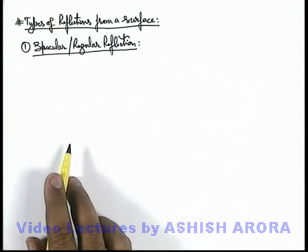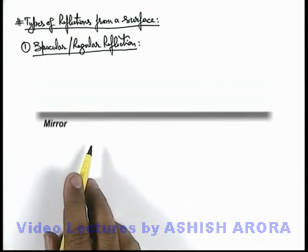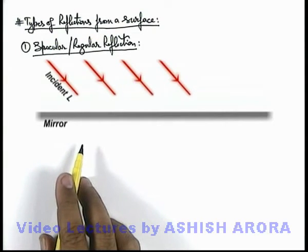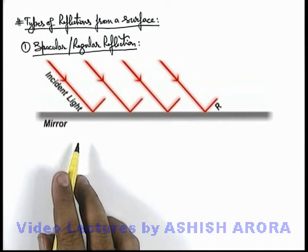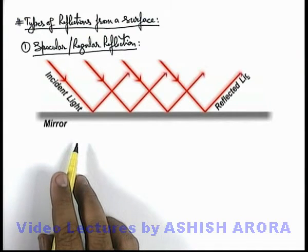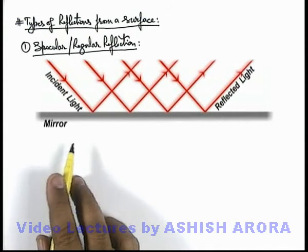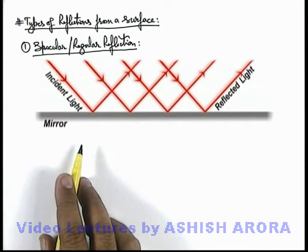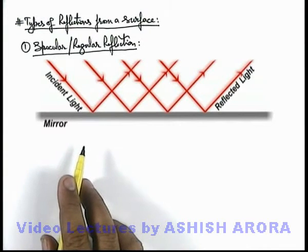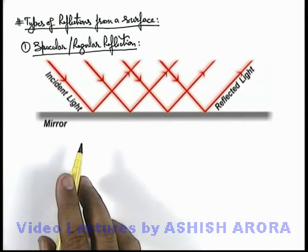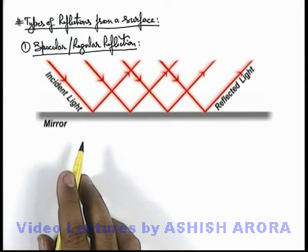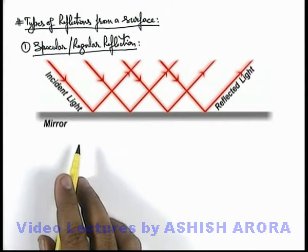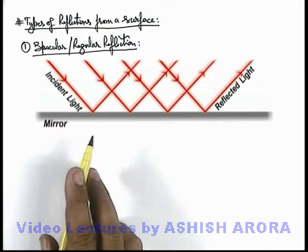If this is a smooth surface on which a light beam is incident, then all the light rays which are incident onto it are reflected according to the laws of reflection. The angle of incidence for every light beam is the same, so all the light rays are reflected in the same direction at the same angle of reflection.